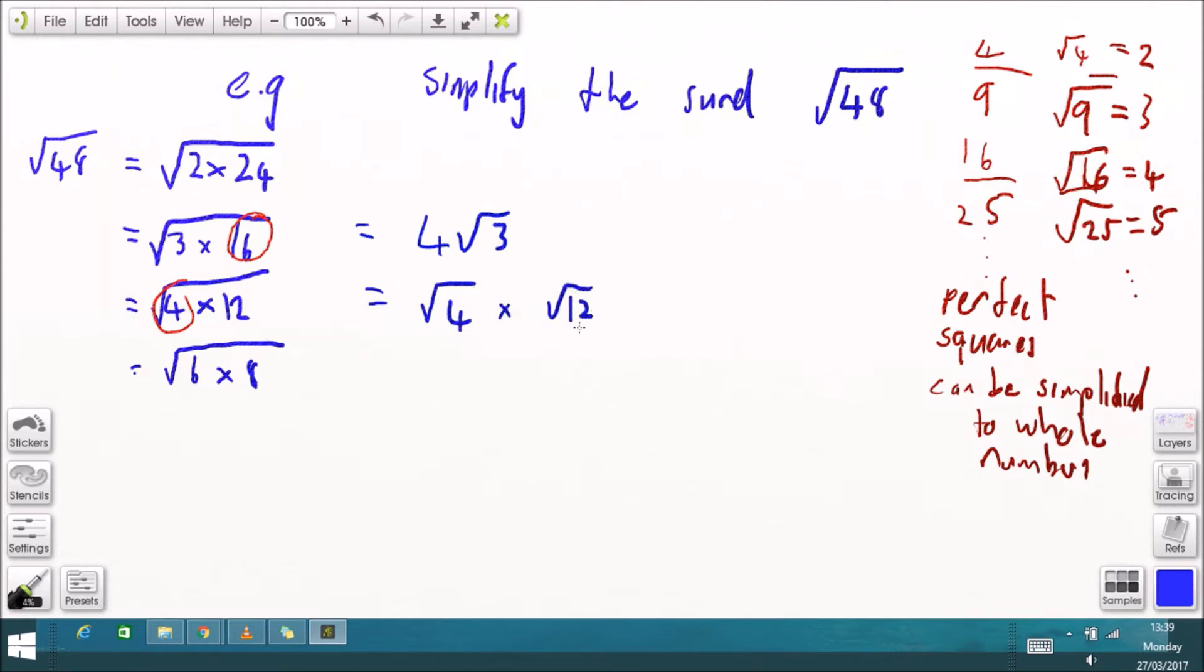I'm going to do the same thing again with this other version root 4 times root 12 equals 2 times root 12 but 12 isn't a prime number like 3 was so you can probably keep going so let's do that, that's going to be 2 times root 4 times 3, 12 is 4 times 3